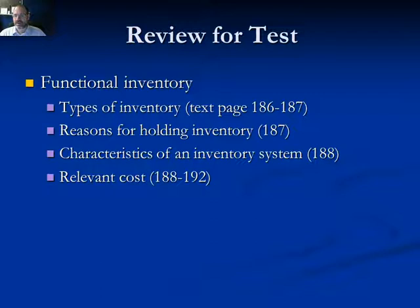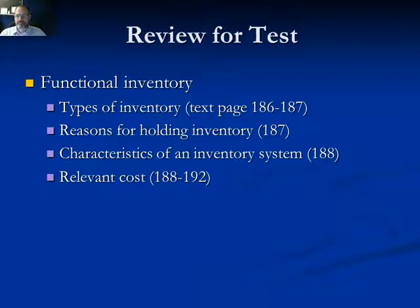In terms of inventory, know the types: raw materials, components, work in process, and finished goods. Remember that work in process typically costs more to hold per item than finished goods because it takes up valuable space on the factory floor. Understand the reasons for holding inventory — the big reason is randomness in demand and randomness in lead time. Another big reason is economics of scale: quantity discounts or setups. Another potential reason is speculation — maybe you think the price is going to rise.